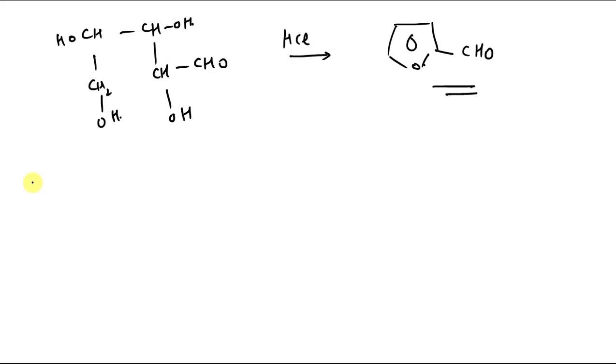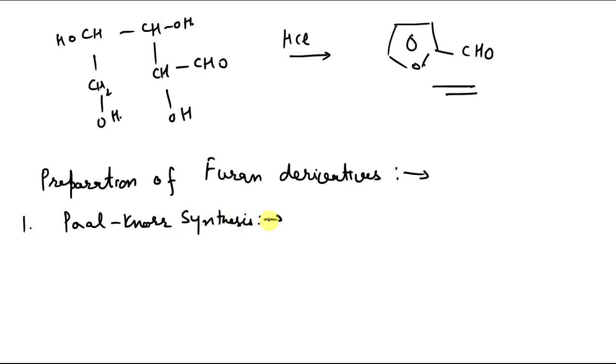So next is preparation of furan derivatives. Here my intention is just to show you the various methods to prepare these five-membered heterocyclic compounds. I am not discussing these mechanisms in detail, so that we can discuss in some other lecture. Here again, the method is Paal-Knorr synthesis. It is also used for the synthesis of furan. Here we basically use dehydration.